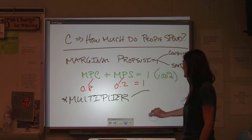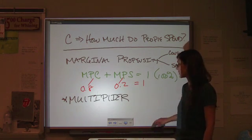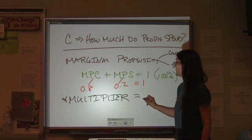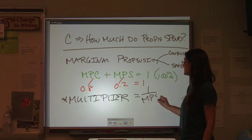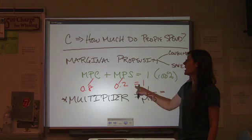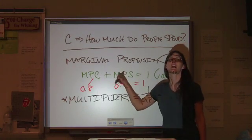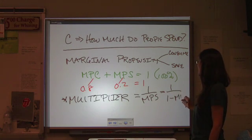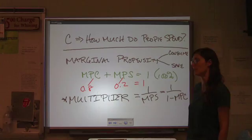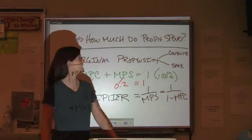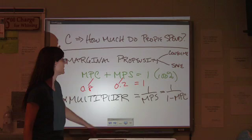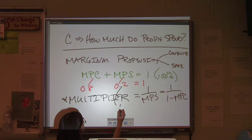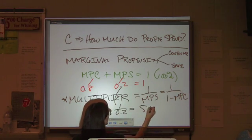It's nice and easy, but you just got to remember which number to put where. The multiplier, 1 over the MPS, and because both of these two together equal 1, it's exactly the same thing to say 1 over 1 minus the MPC. Using the numbers that we have here, that would give us a multiplier of 1 over 0.2 or 5.